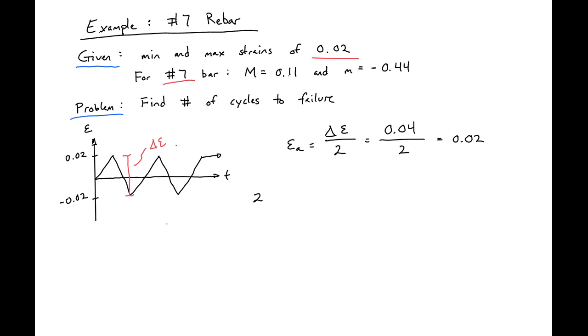We'll use our equation from before in terms of half cycle. 2Nf equals epsilon a over m to the 1 over m. In our case, we have all these values now. So 0.02 divided by 0.11 to the 1 over negative 0.44 power. And we can find the total number of half cycles to be 48.